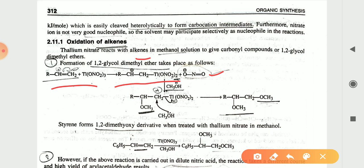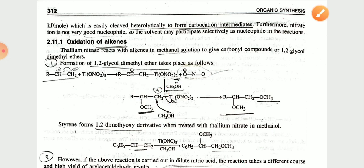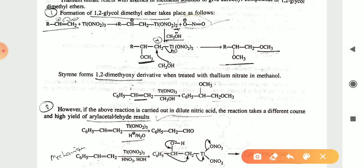In the presence of CH3OH, it reacts with the CH2 group, the thallium nitrate is eliminated, and you get the compound with two OCH3 groups. In another reaction, the C=C double bond breaks and the OCH3 group combines.